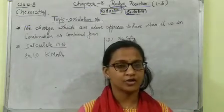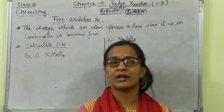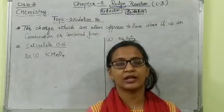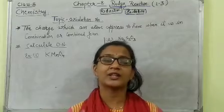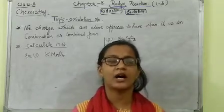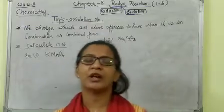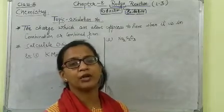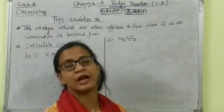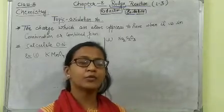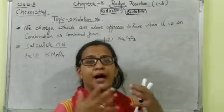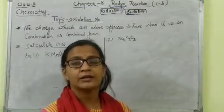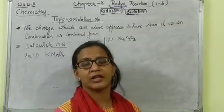As we already discussed, we can define oxidation and reduction based on charges — how many electrons are lost or gained. To know how many electrons are lost or gained, we need to calculate the charge on the atom. Oxidation number is essentially the total charge that appears on an atom when it is in a combined state.